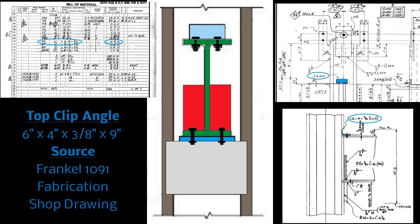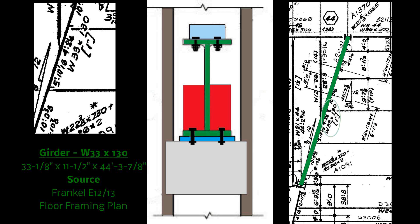The girder is attached to this clip by means of two bolts. As for the girder itself, you can see that in Frankel E 12 13 floor framing plan. The girder is 33 1/8 inches by 11 1/2 inches by 44 foot 3 7/8ths inches.